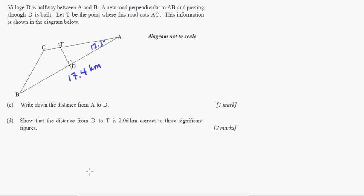In the second part here, it says village D is located halfway between A and B. A new road perpendicular to AB and passing through D is built. Let T be the point where the road cuts AC. This information is shown in the diagram below. Once again, it's not drawn to scale, so you can't measure it. But we did figure out two things here. And you would get follow-through even if you missed the first two problems. So keep going on these. Write down the distance from A to D. Well, we found that this was 17.4. So we just need to cut it in half because they said D is in the middle. So 17.4 divided by 2 would be 8.7 kilometers.